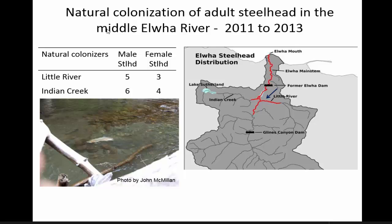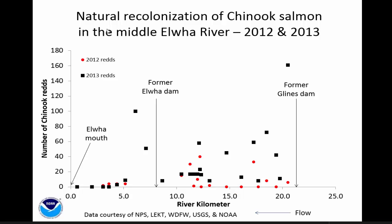This is actually a female digging her nest right here. Chinook salmon were considered a prize fish before dam removal — there are stories about big Chinook up to 100 pounds returning to the Elwha. Since dam removal, we've seen quite a few Chinook spawning in the middle Elwha. Here at the former Glines Canyon Dam site, the red dots denote 2012 spawning nests and the black dots denote 2013 nests — you can see there were quite a few spawning nests in that middle Elwha.